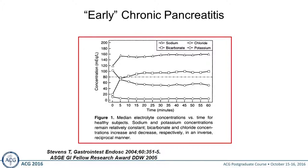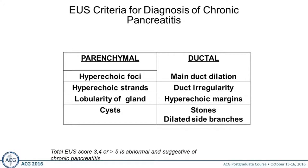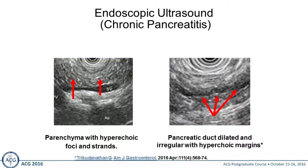A paper by one of my former fellows, Tyler Stevens — now faculty at the Cleveland Clinic — looks at how you can reproduce the Dreiling tube data with an endoscope to assess whether a person has early changes of chronic pancreatitis. Most of us now have access to EUS. There are parenchymal features and ductal features — the standard criteria has up to nine. The Rosemont criteria is also similar and gives a little more description. They're pretty much equivalent in helping you make the diagnosis.